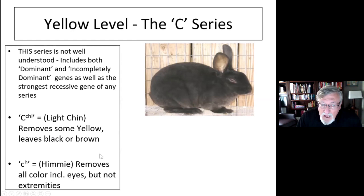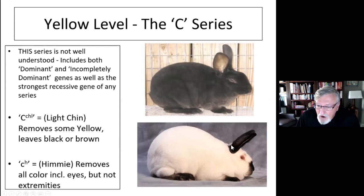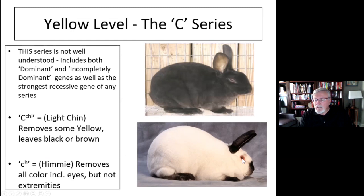The fourth is what's called CH — if you want to remember it easily, think Himalayan, like a Californian rabbit. It removes all color from all areas, including the eyes, but not the extremities. You look at the back legs, front legs, nose, and ears — these are extremities. So the CH gene erases all color including the eyes, which is why they have pink eyes. What you're looking at is not actually a color — you're looking through the iris and retina to the blood in the back of that eye.